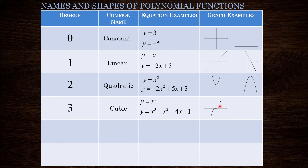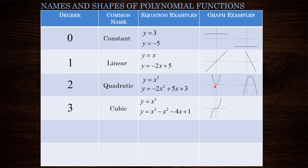On the right side the graph kind of reminds us of y equals x squared, but on the left side it doesn't — here we have y values that are negative. With y equals x squared, squaring positive or negative x values always gives positive y values, so both sides of the parabola show positive y values. But with y equals x cubed, cubing positive values gives positive y values while cubing negative values gives negative y values, which is why the left side of the graph shows negative values.